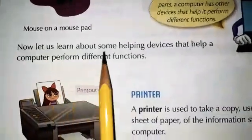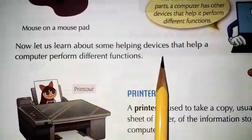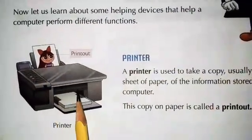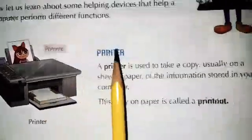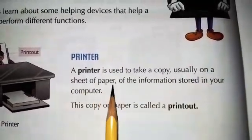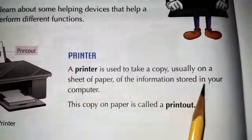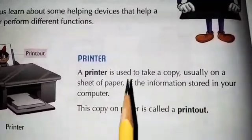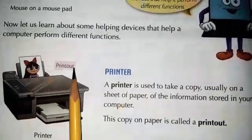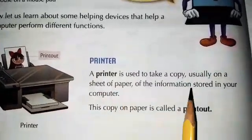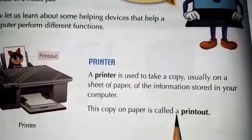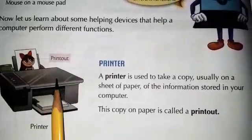Now let us learn about some helping devices that help a computer perform different functions. This is a printer. A printer is used to take a copy, usually on a sheet of paper, of the information stored in your computer. We use a printer to take a printout — any picture or information stored inside the computer, its copy on paper is called a printout.